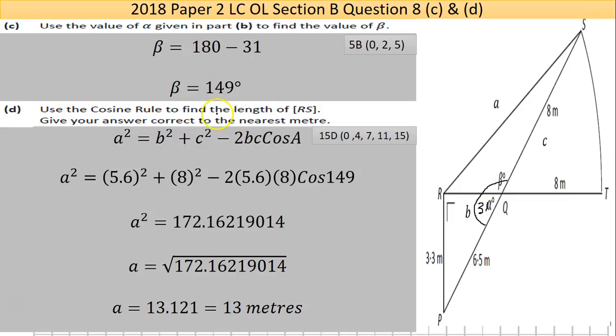Part D here says use the cosine rule to find the length of RS. I've put the diagram in here. Actually I've gone straight to the answer here and the triangle over here. Use the cosine rule to find the length of RS, so that's RS there. I've put in A, B and C here just to highlight that, so we're trying to find that side.